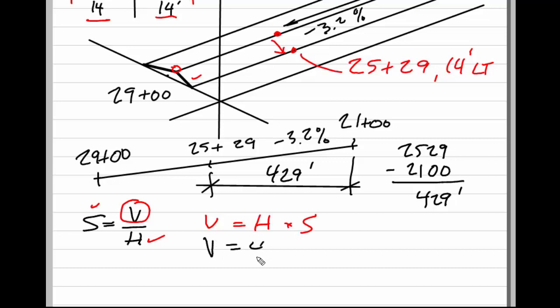Vertical now is going to be 429 feet times 3.2%, and to divide by 100 I'll get that back into decimal form. So this works out to be a negative 13.73 feet.